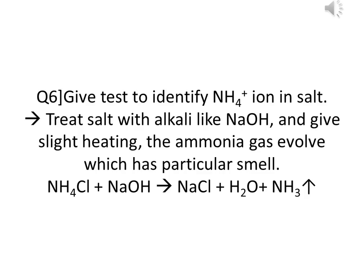How do you identify the ammonium ion in a salt? Treat the salt with an alkali like NaOH and apply slight heating. Ammonia gas evolves, which has a characteristic smell. For example, with ammonium chloride and NaOH, you get NaCl, water, and ammonia gas. The distinctive smell of ammonia gas confirms the salt is an ammonium salt.